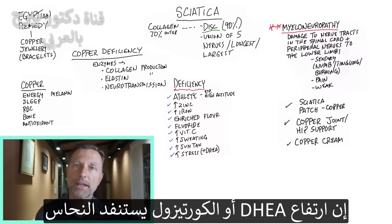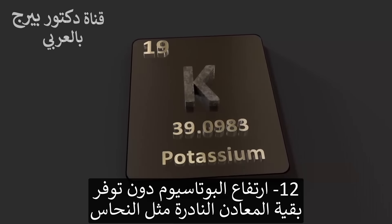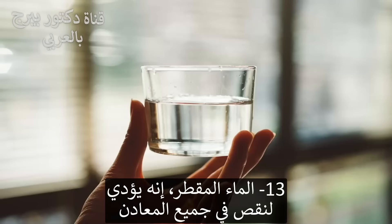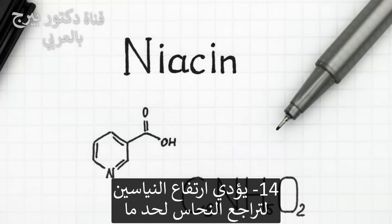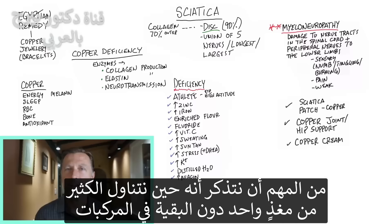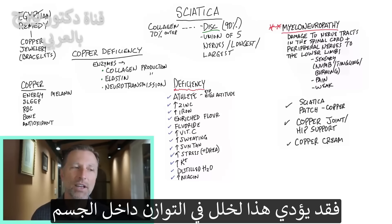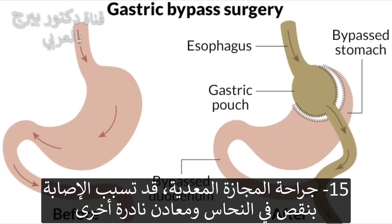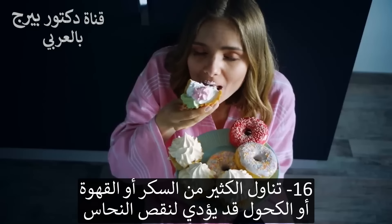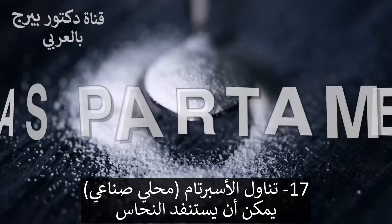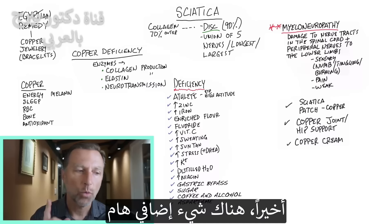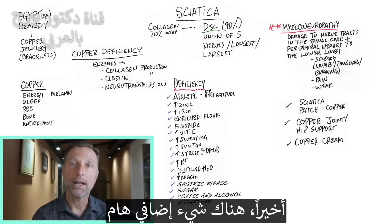Enriched flour products — breads and pasta — can deplete copper. Fluoride from tap water definitely depletes copper. Too much vitamin C, mainly in the form of ascorbic acid — if you're taking two to four grams of ascorbic acid — will deplete your copper as well. A lot of sweating can deplete copper because it comes out through sweat. Too much sun tanning can deplete copper because of the connection with melanin. Stress, too much DHEA or cortisol, too much potassium without trace minerals, and distilled water can all worsen a copper deficiency.